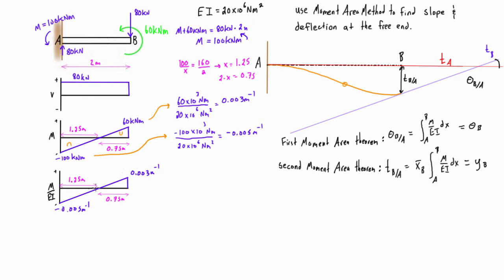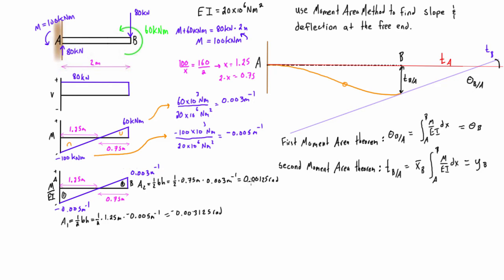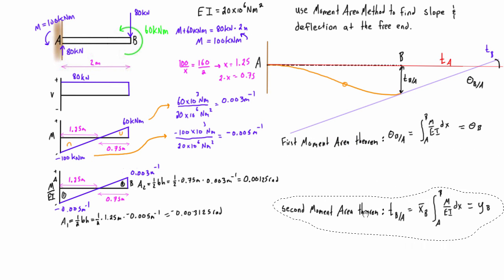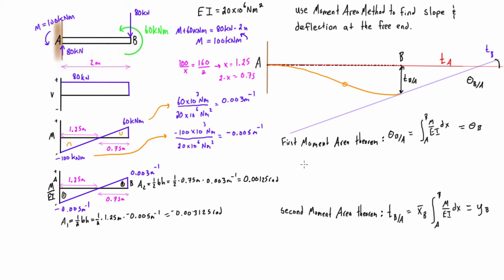The integral from A to B is just the area of the M over EI diagram between A and B. Areas below the axis are negative and areas above are positive. Labeling area 1 and area 2, their values are negative 0.003125 radians and positive 0.00125 radians. By the first moment area theorem, theta B with respect to A equals A1 plus A2, giving us negative 0.002 radians.